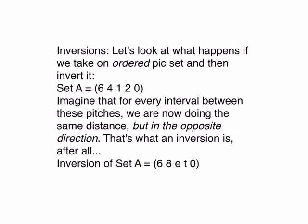Now let's look at what happens if we take unordered PC sets and then invert it. So imagine if we had a set that had the following notes. So if the notes were F sharp, E, C sharp, D, and C natural, 6, 4, 1, 2, 0. We're doing these in order. Imagine that if we had a melody like this.